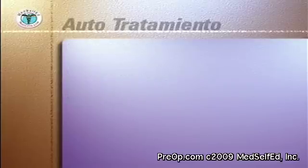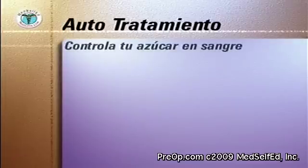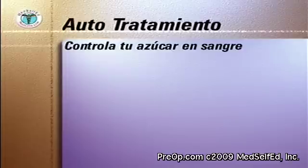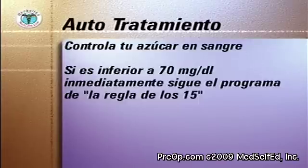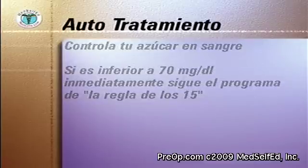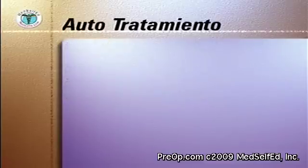Si usted sospecha que su azúcar en sangre está baja, inmediatamente monitoree su azúcar. Si esto confirma una hipoglicemia, es decir, un resultado de 70 miligramos por decilitro o inferior, o si las pruebas no están disponibles, siga el programa de la regla de los 15.